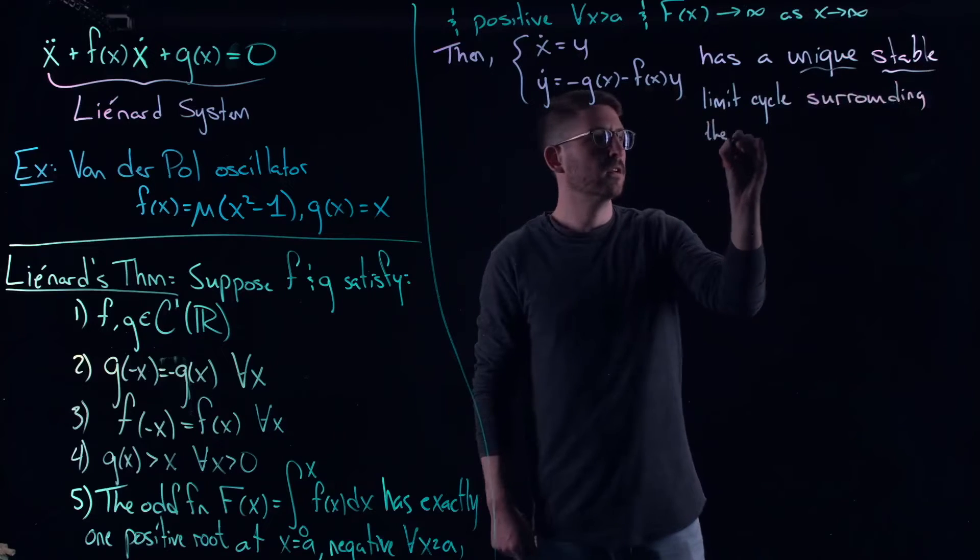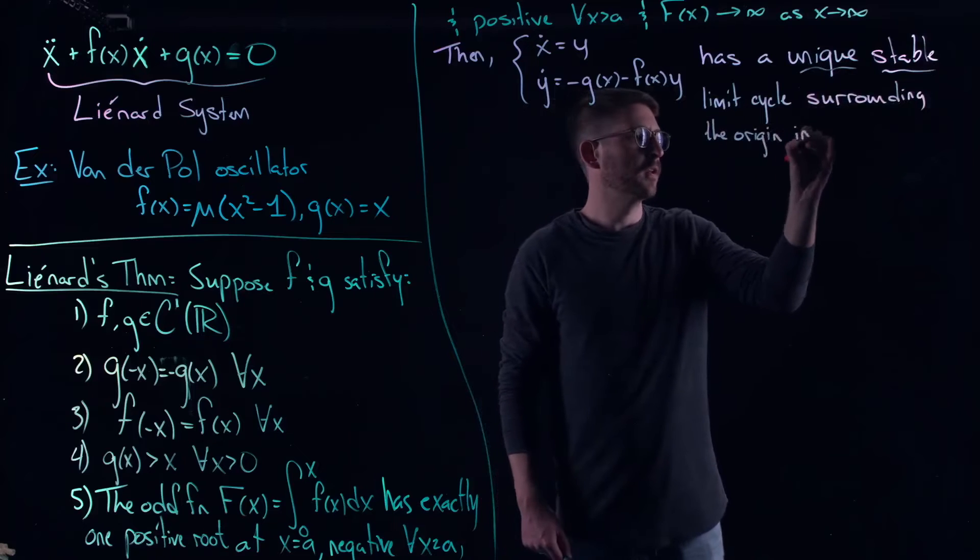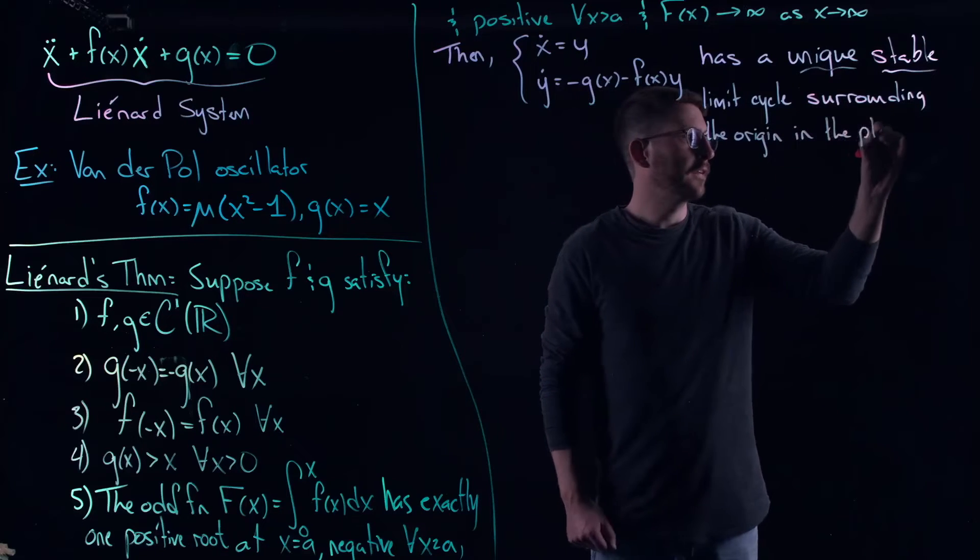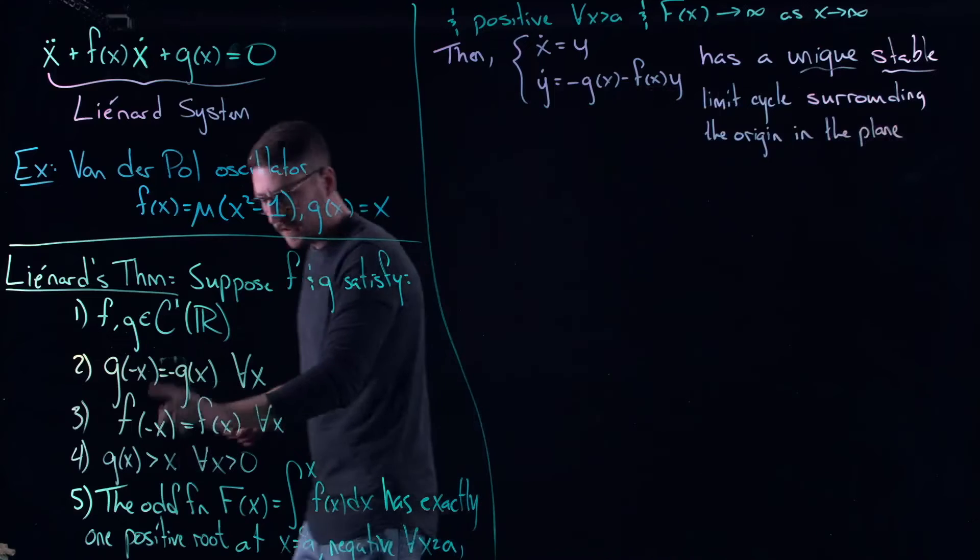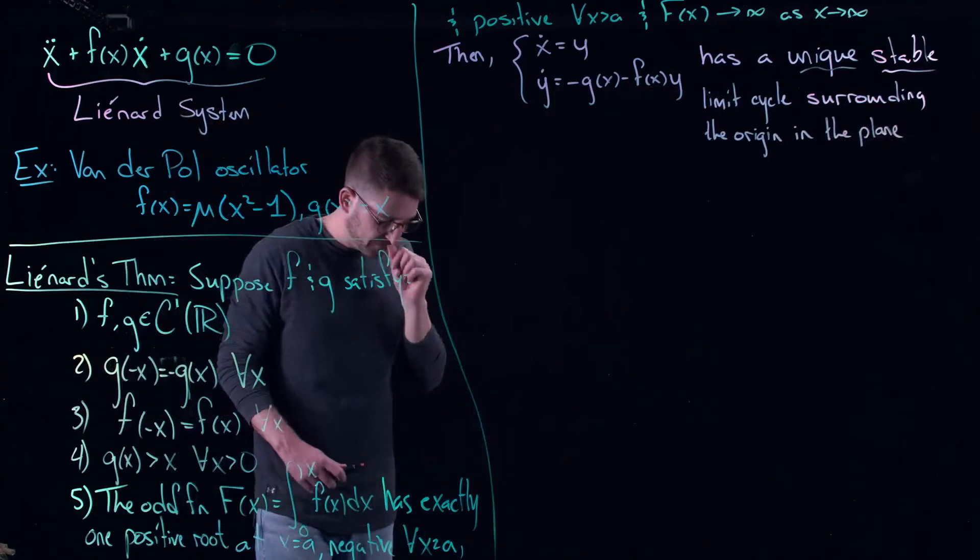Over the entire plane, surrounding the origin in the plane. And the way that we can show that it surrounds the origin is basically coming from these symmetry properties of f and g.